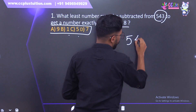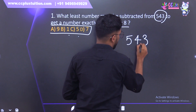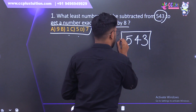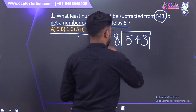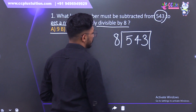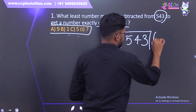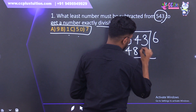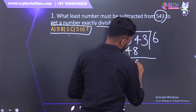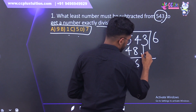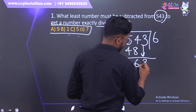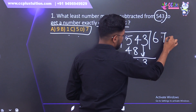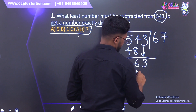543 divided by 8 — we work through this. Six 8s are 48, and each step: six 8s are 48. Seven 8s are 56.